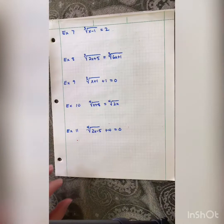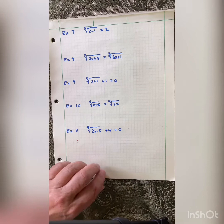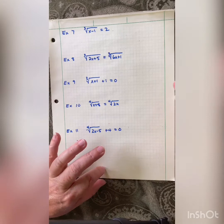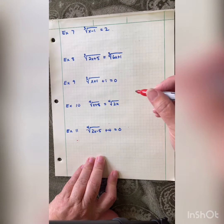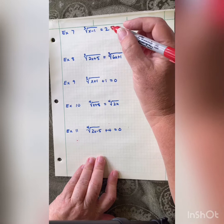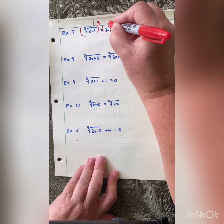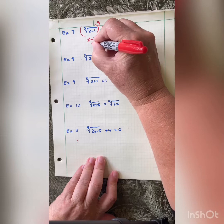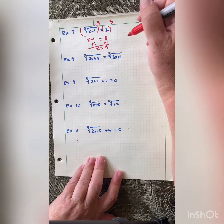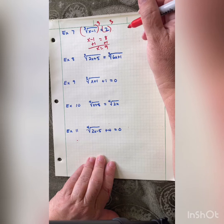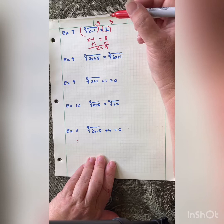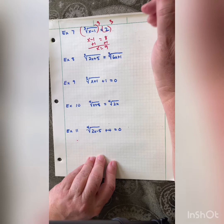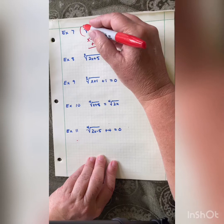We can use other powers besides squares — it'll work with cubes, 4th powers, 5th powers, whatever the nth power is — where nth means whatever your index is. For a cube root example: isolate it, then cube both sides. That gives x − 1 = 8, so x = 9. Note: if the index is odd, you do not have to check — those answers are always going to work and will not produce extraneous solutions. It is nice to check anyway, especially on a test, but it's not required.